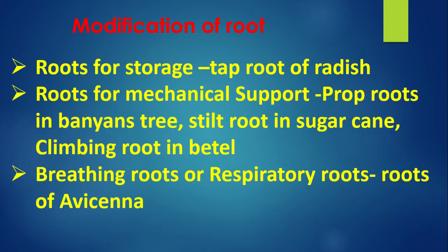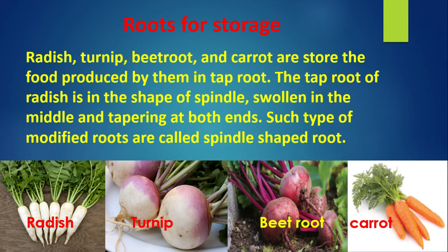Modification of roots: Roots for storage — for example, taproot of radish; roots for mechanical support — prop roots of banyan tree; stilt roots of sugarcane; climbing roots of betel. Breathing roots are respiratory roots found in Avicennia. Radish, turnip, beetroot and carrot store food produced by them in the taproot. The taproot of radish is spindle-shaped — swollen in the middle and tapering at both ends; such modified roots are called spindle-shaped roots.